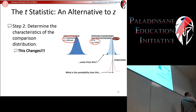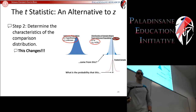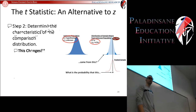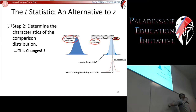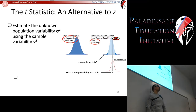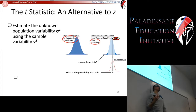So let's start looking at those changes. Step two: determining the characteristics of the comparison distribution. We don't have the standard deviation from our population. So we do what we've been doing all along — if we don't know something about the population, we use the sample to estimate that parameter. We don't know what the population variability is, so we're going to use the sample variance.